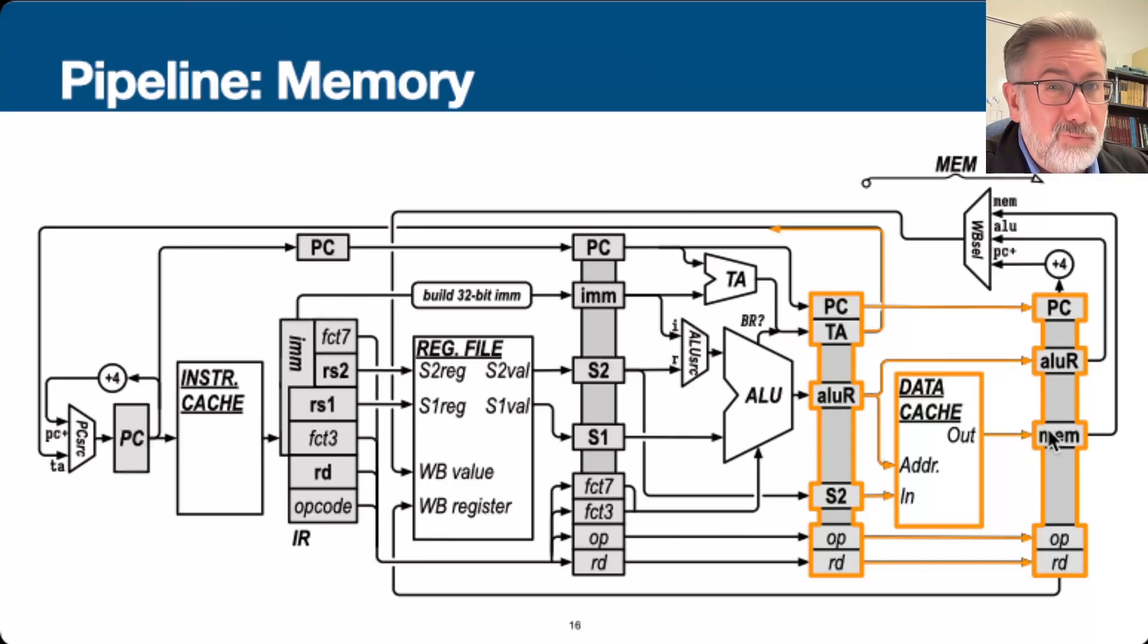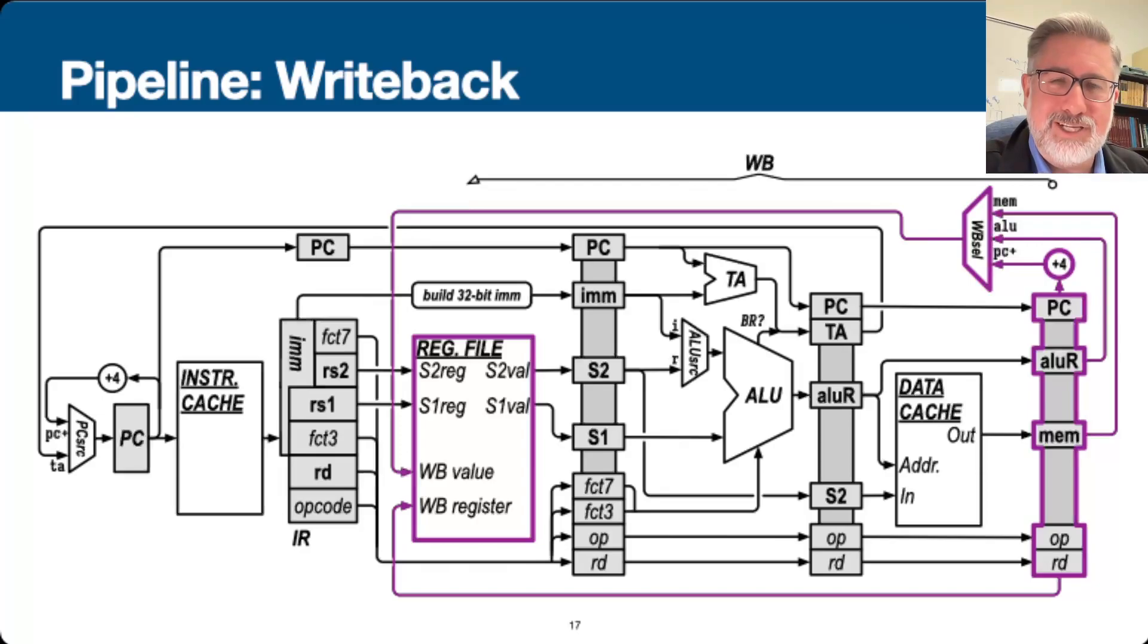And then we're ready for write-back. So write-back now, we have generated these three things. We've got the program counter, we've got the ALU result, and we've got the output from memory. And then in our write-back phase, we just choose one of those to write to the register. Which register? Well, we have carried along the destination register each phase of this pipeline. We've carried it along with us so that when it's time to write back, we know where to put it. So here's what the write-back phase looks like. We're accessing this register, which contains the results. We're making a choice in this multiplexer, which says what we're storing. And then this destination register says where we're putting it.